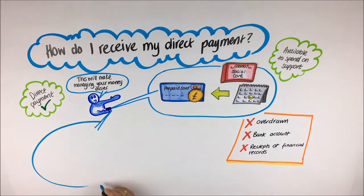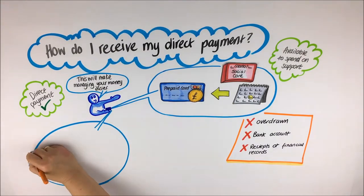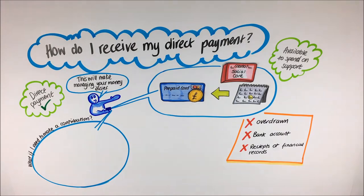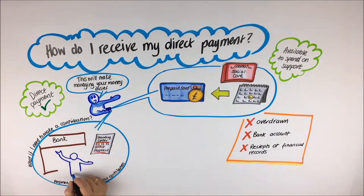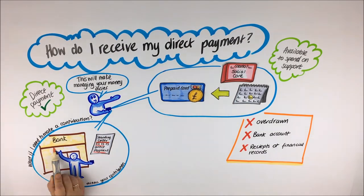What if I have been financially assessed to make a contribution towards my care? How do I pay this onto my prepaid card? If you have been financially assessed as needing to make a contribution towards your care, your direct payment from Birmingham City Council will be paid to you minus the amount you need to contribute. You can set up a standing order or a direct debit from your personal bank account directly to your prepaid card to pay your contribution.